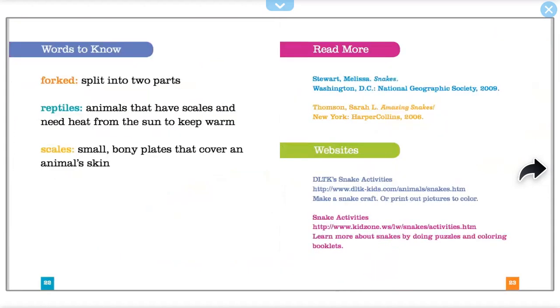Words to know. Forked: split into two parts. Reptiles: animals that have scales and need heat from the sun to keep warm.